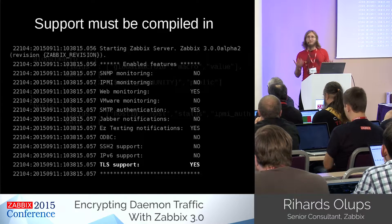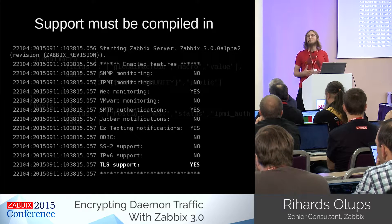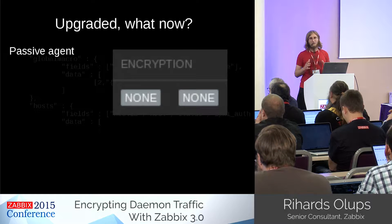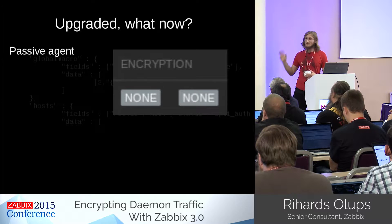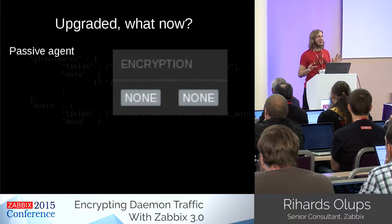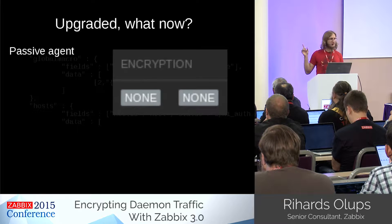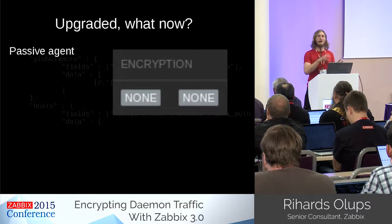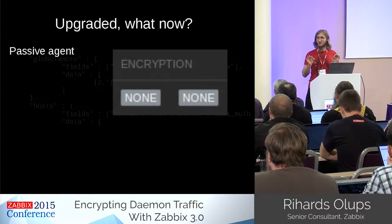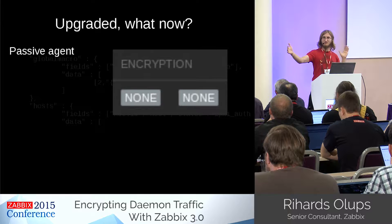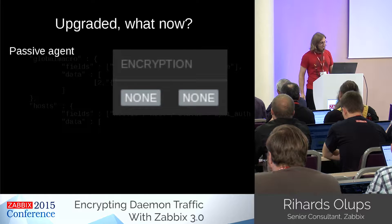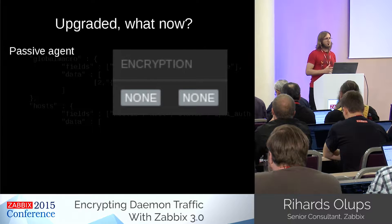When upgrading, in the frontend host list you'll see an encryption column with 'none' and 'none'. One is for incoming, one is for outgoing connections — personally I'm not always sure which is which just from looking at it, and feedback on how to make this obvious without creating very long column names would be welcome.